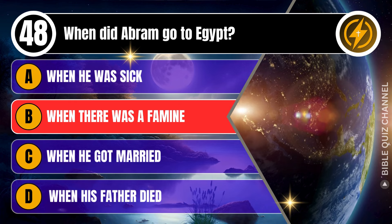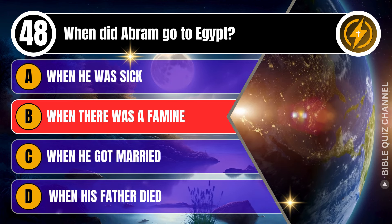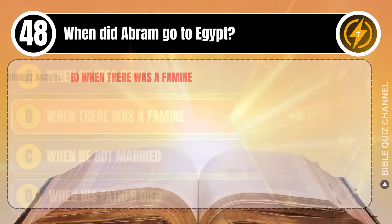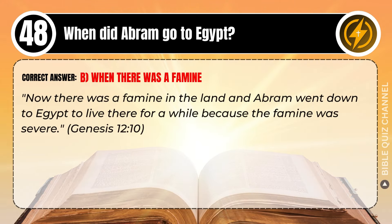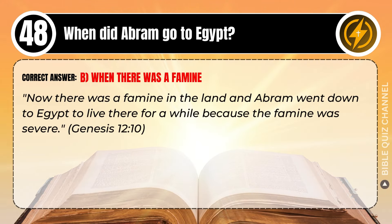Correct answer: B. When there was a famine. Explaining the Bible — Now there was a famine in the land, and Abram went down to Egypt to live there for a while, because the famine was severe. Genesis, chapter 12, verse 10.